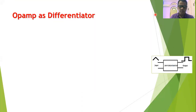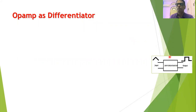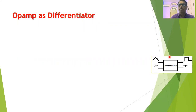Let us start the session with the question: what do we mean by differentiator? A differentiator is an electronic circuit which can perform the mathematical operation of differentiation. That is, the output voltage of this circuit is equal to the derivative of the input voltage.